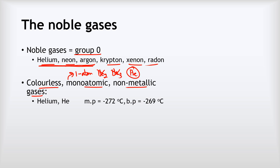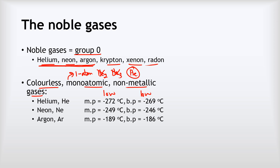Helium has very very low melting and boiling points. Its melting point is minus 272 degrees Celsius, almost absolute zero — the coldest possible temperature. The boiling point is also extremely low, minus 269, only slightly warmer than that. Moving on to neon, slightly higher but still very low melting and boiling points, and the same for argon — a bit higher but still very very low. There's a gradual increase in melting and boiling points as we go down the group, but they are all very low.